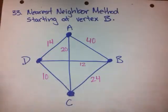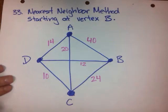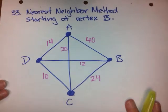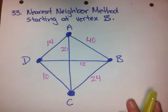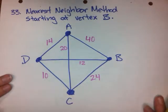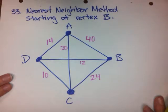And now, question number 33 is asking us to use the nearest neighbor method starting at vertex B to find the weight of a solution to the Hamilton circuit.